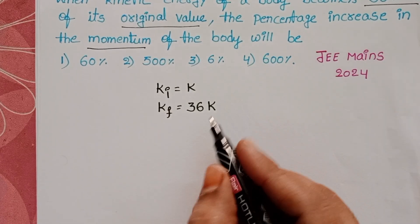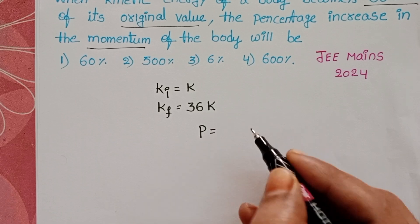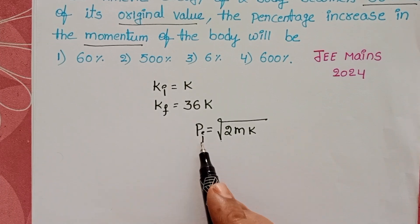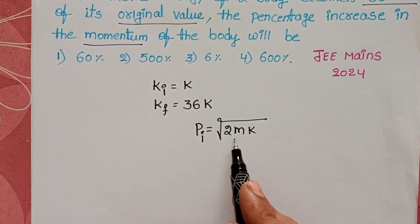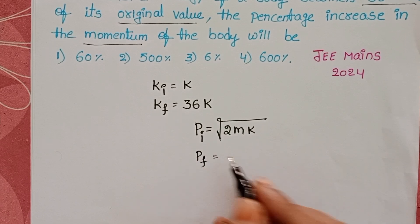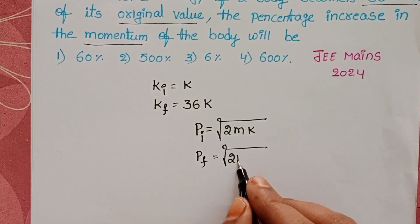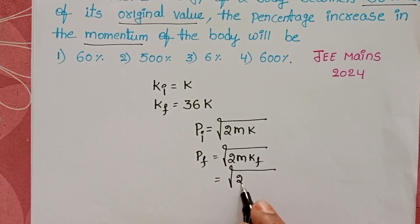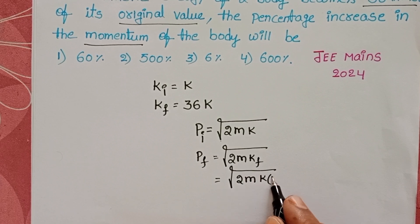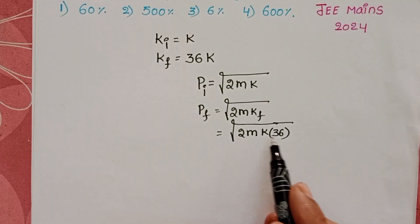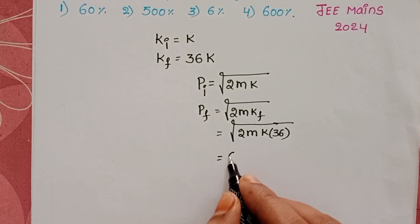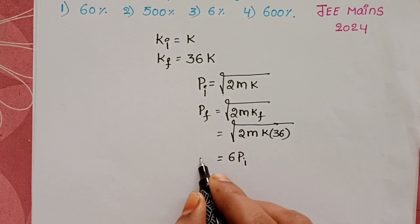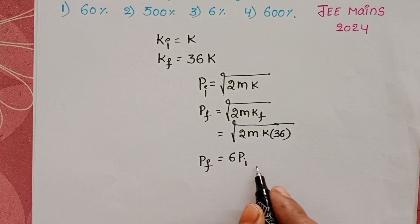We know the relation between momentum and kinetic energy: momentum equals the square root of 2mK, where K is the kinetic energy. The initial momentum is √(2mK), and the final momentum is √(2m × 36K). Since the square root of 36 is 6, the final momentum equals 6 times the initial momentum.